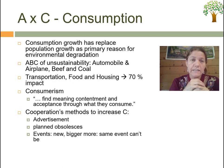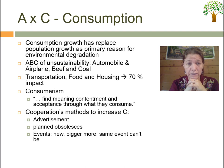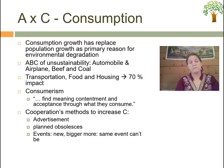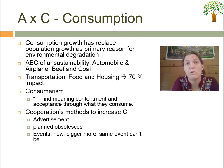A and C together represent affluence and consumption as the world's total consumption pattern. Consumption growth has actually replaced population growth as the primary reason for environmental degradation. The ABCs of sustainability are automobiles, airplanes, beef, and coal. Transportation, food, and housing make up approximately 70% of world impact. This can be summarized as 'consumer reason' — defined as finding meaning, contentment, and acceptance through what we consume — which we will revisit in social sustainability.